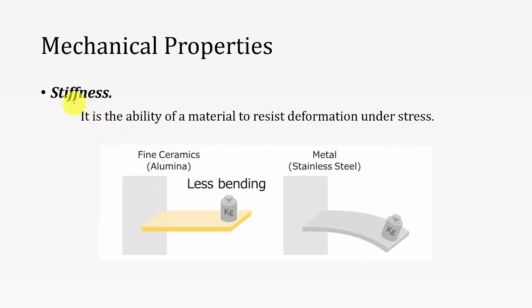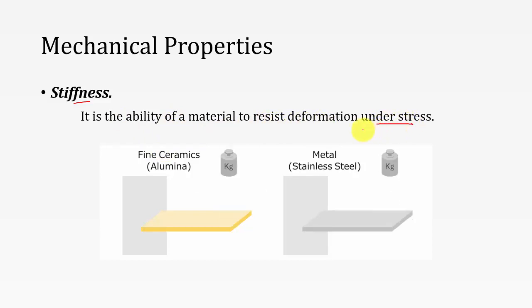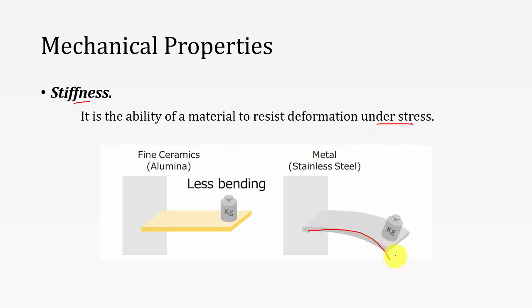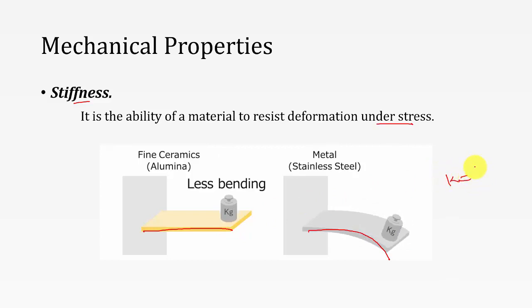Stiffness is the ability of the material to resist deformation under stress. If the material deforms to a high extent then it has low stiffness; if it deforms a small amount then it has high stiffness. Stiffness can be written as k = load / deflection.